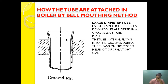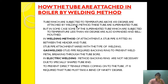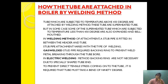Tubes which are subjected to temperatures above 450°C are attached by welding method. Superheated tubes are mainly attached by welding. If the temperature of the superheated tube is less than 450°C, then normal expanding and bell mouthing is done, but if it is above 450°C then welding is carried out.